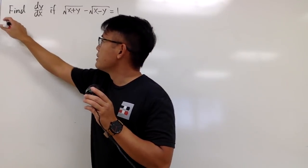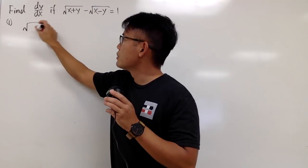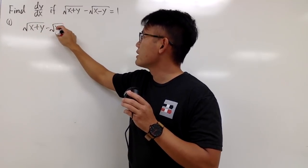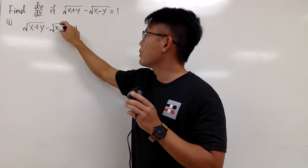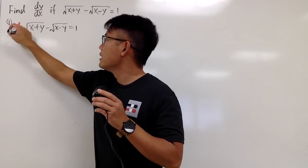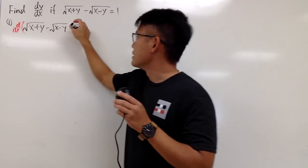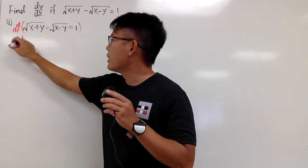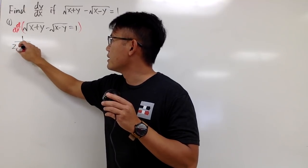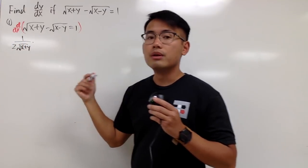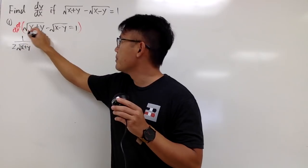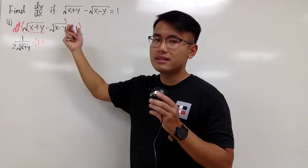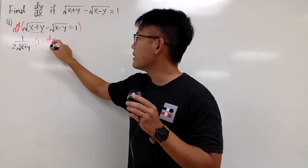We will start by using implicit differentiation. Let me just write this down again: square root of (x plus y) minus square root of (x minus y) equals 1. We are going to apply d/dx. The derivative of a square root of something is 1 over 2 times the square root of the inside, and we multiply by the derivative of the inside because of the chain rule. So the derivative of x is 1 plus the derivative of y is dy/dx.